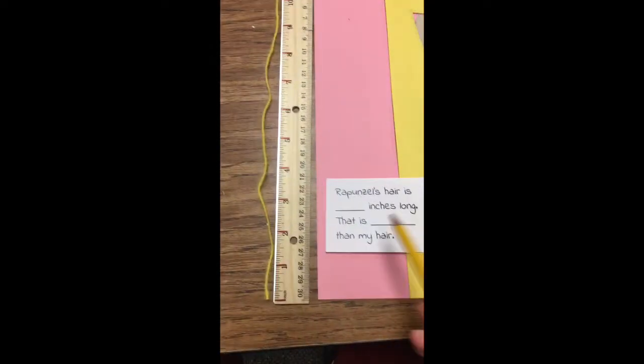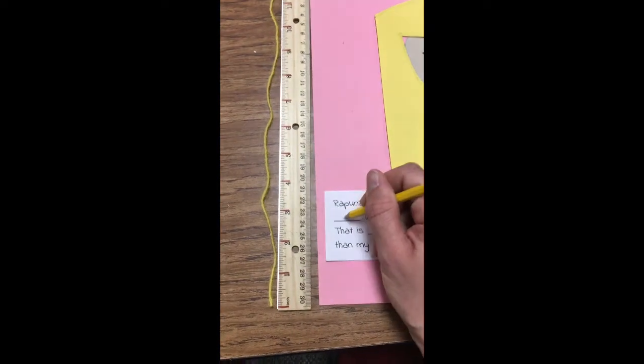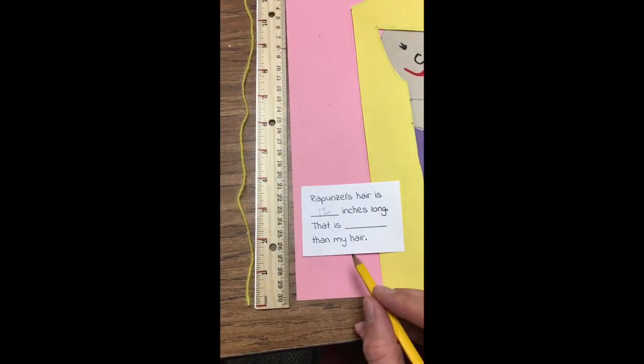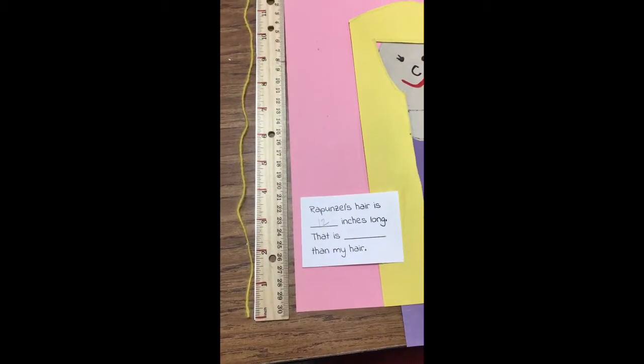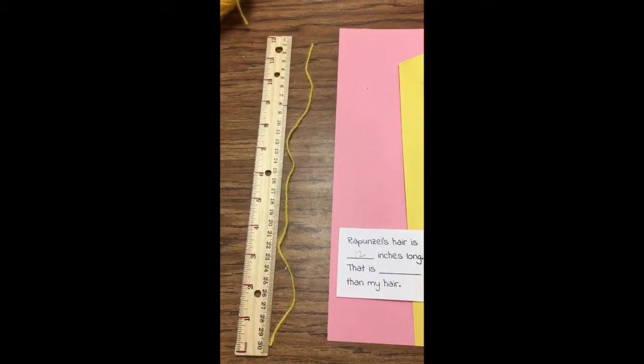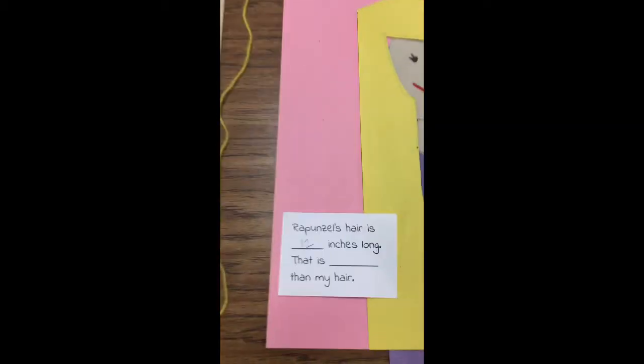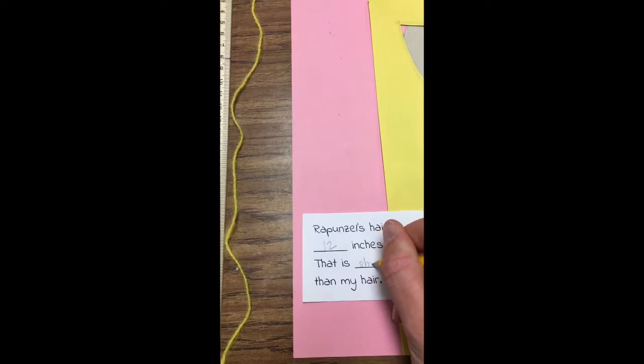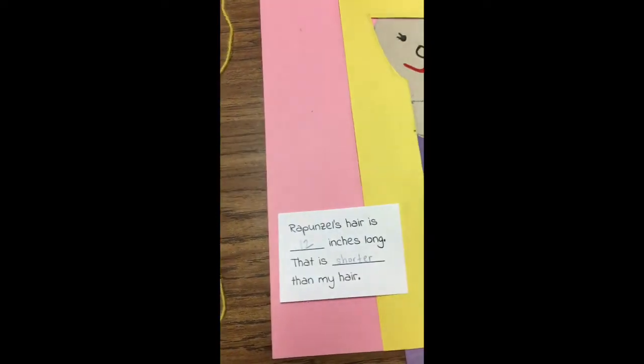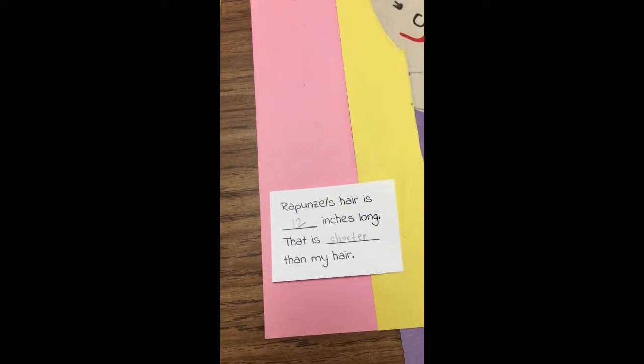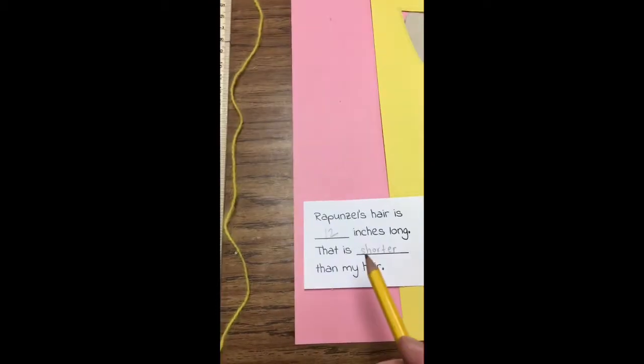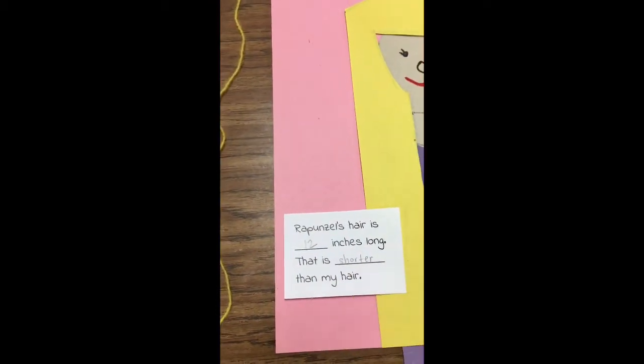So on my paper, I'm going to say Rapunzel's hair is 12 inches long. That is blank than my hair. Now I have to figure out how long my hair is. I measured my hair, and my hair is way longer than a ruler. So on here, I'm going to say Rapunzel's hair is shorter than my hair. Shorter than my hair. If your hair is longer, her hair is shorter. And if you have short hair, you would say that that is longer than your hair.